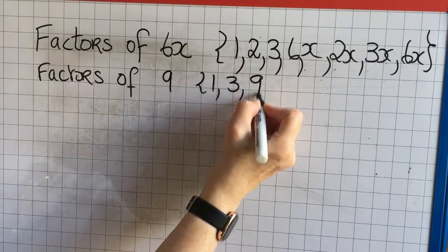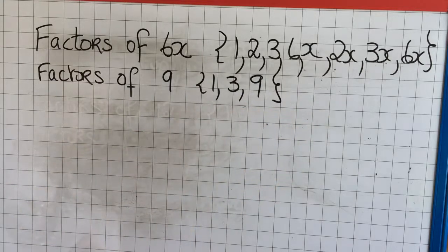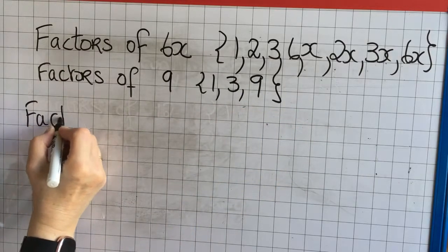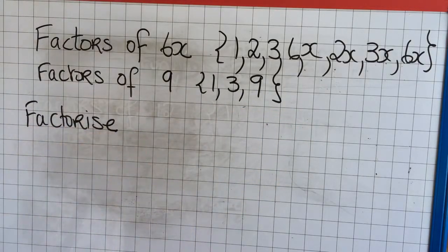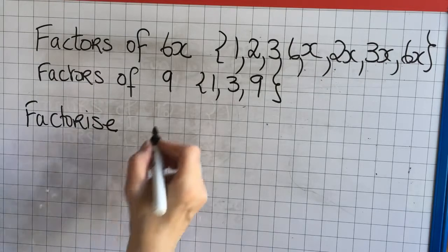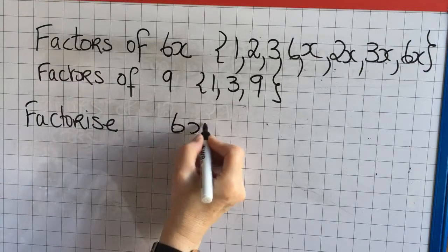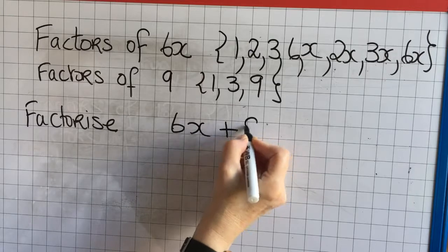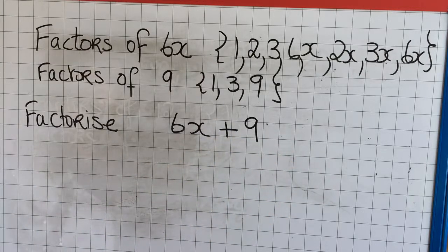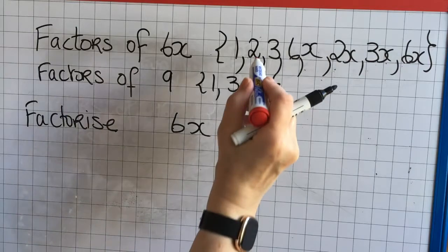The factors of 9 are 1 and 9 and also 3. Now let's factorize an expression. So we'll start with 6x plus 9 because we've got the factors written above.